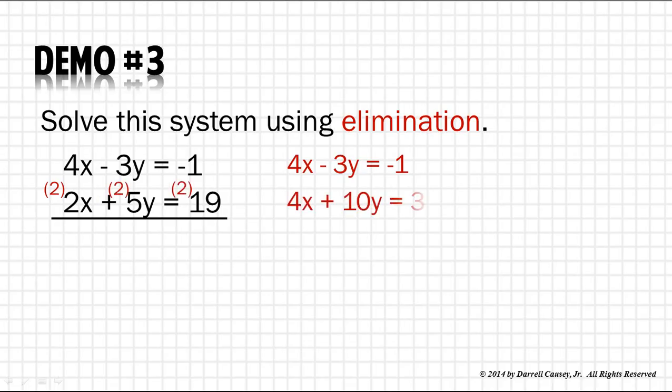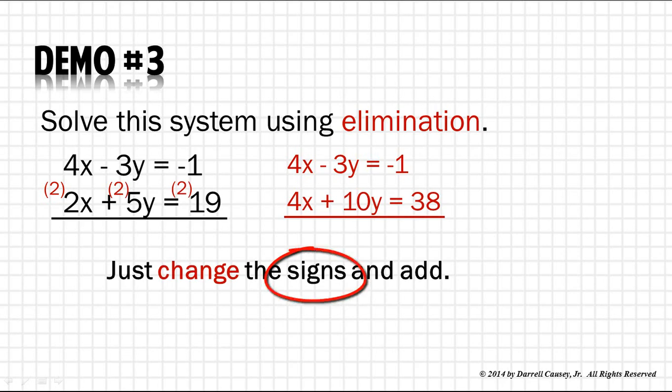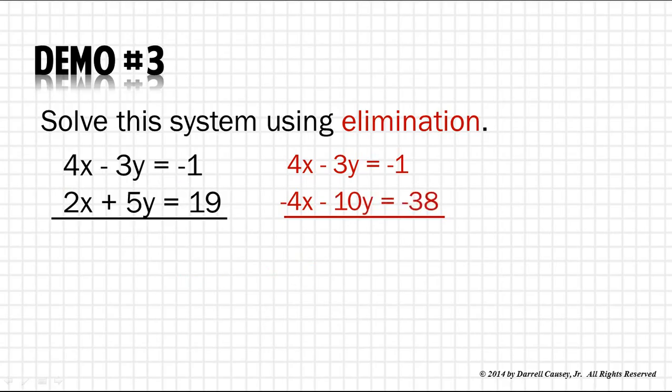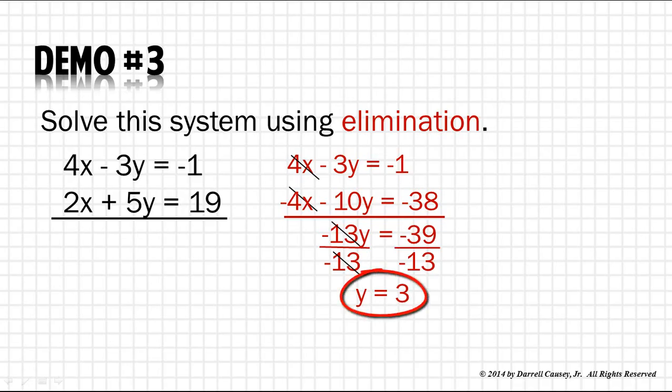I need to multiply everything on the bottom by 2, which gives me a new equation. But in order to get the x's to cancel out, I need to change the signs. Why didn't I just multiply by negative 2? You could have. I find it just as easy to multiply and then change the signs and add. Always an easy way to do subtraction in algebra: just change the signs and add. Let's combine them together. X's cancel out. We get negative 13y equals negative 39. Divide by negative 13, and that gives me y equals 3.